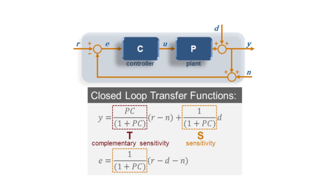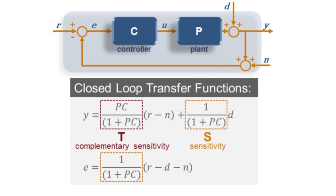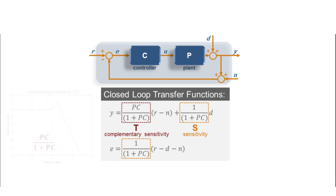And as you can see from the top equation, it directly affects how the reference signal R and the noise N will show up in the output signal Y. 1 over 1 plus PC is called the sensitivity transfer function, or S. And again, from the top equation, you can see that it directly affects how the disturbance D will show up in the output Y. It also shows how sensitive the error signal E is to all three input signals R, D, and N.